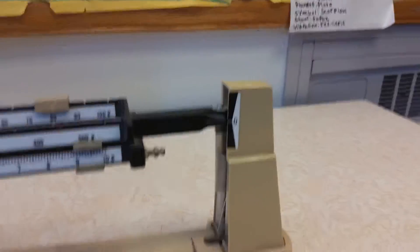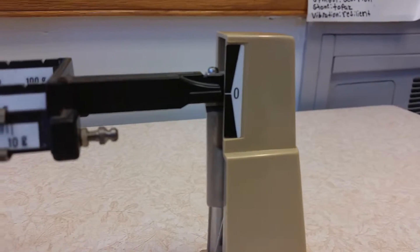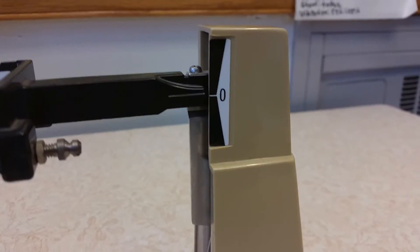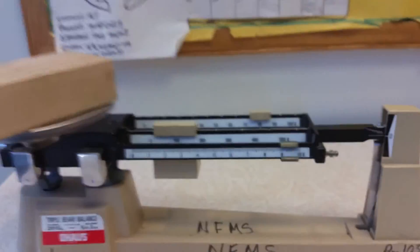Then, you have to make sure that the line on this side of the balance is with the line with the zero. That's how you use the triple beam balance. Goodbye.